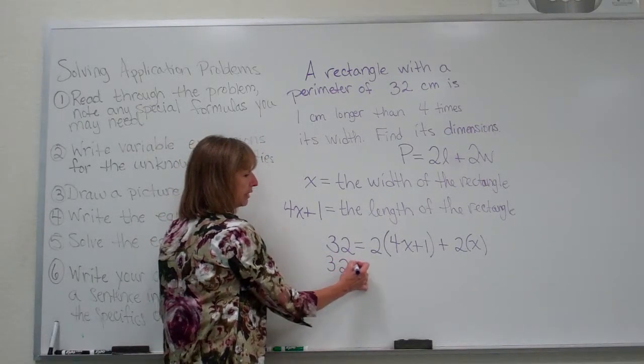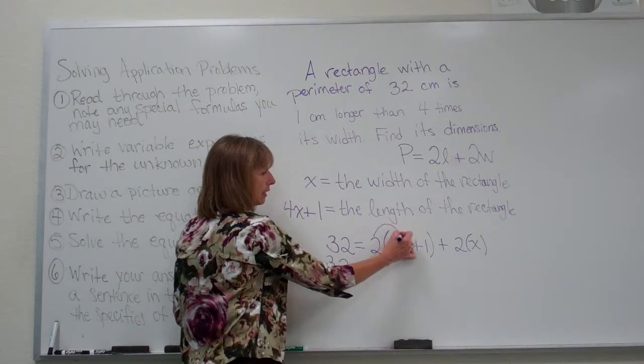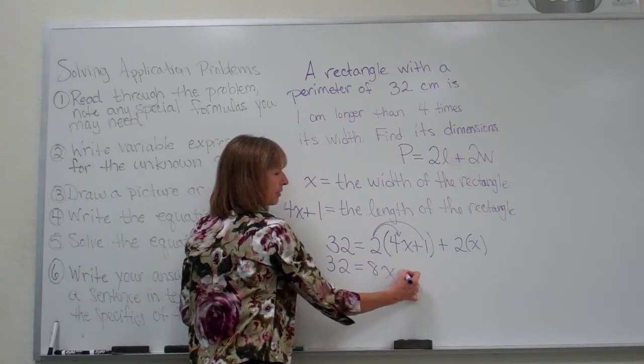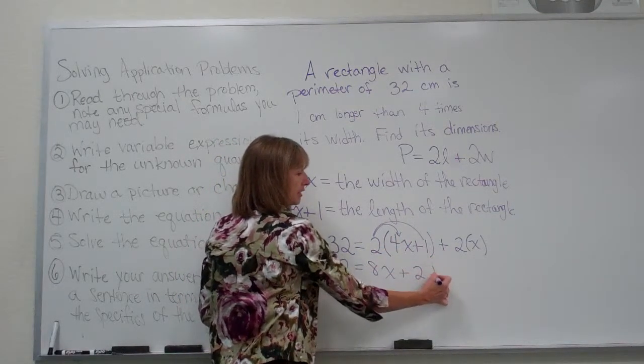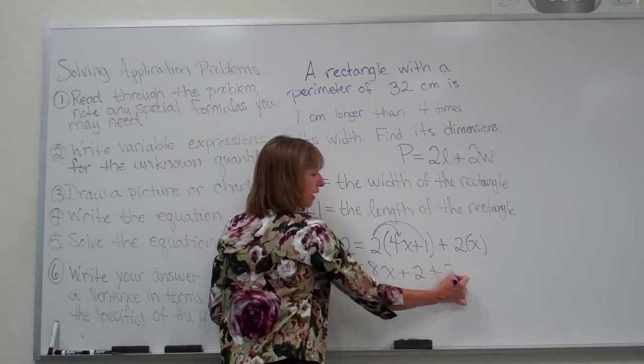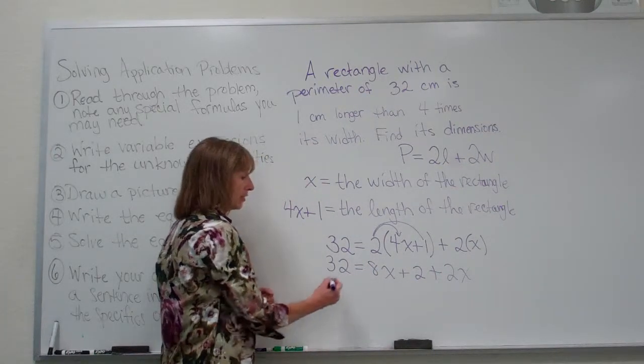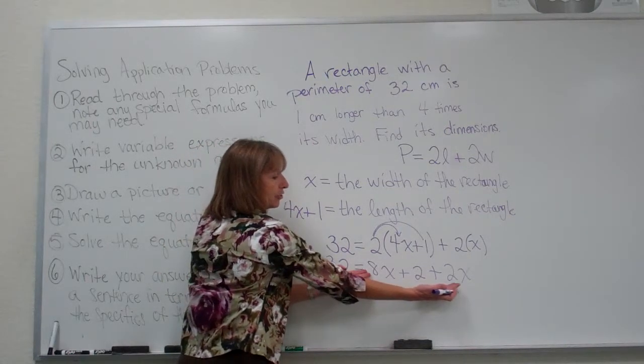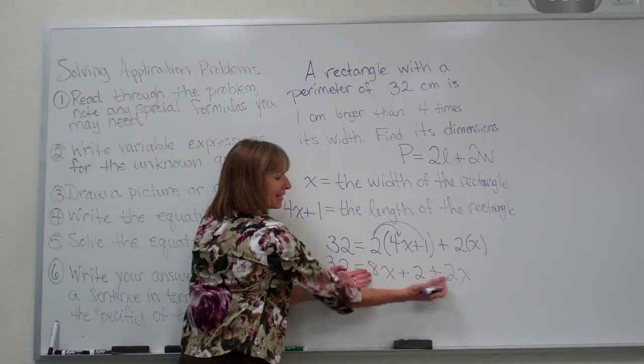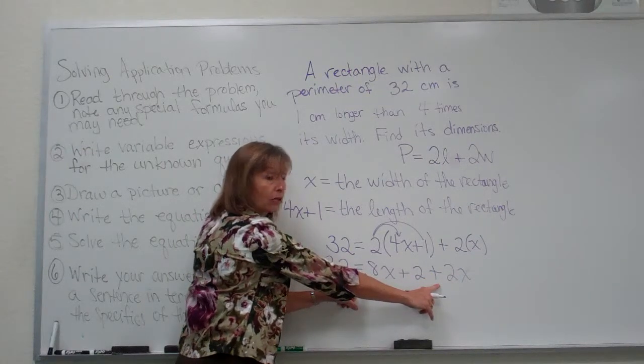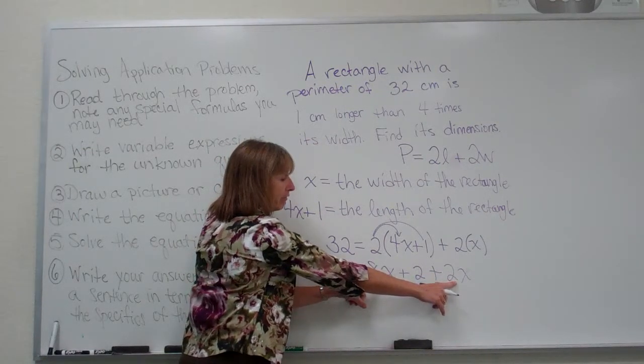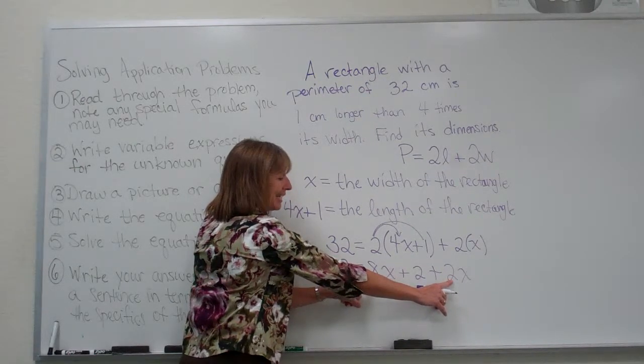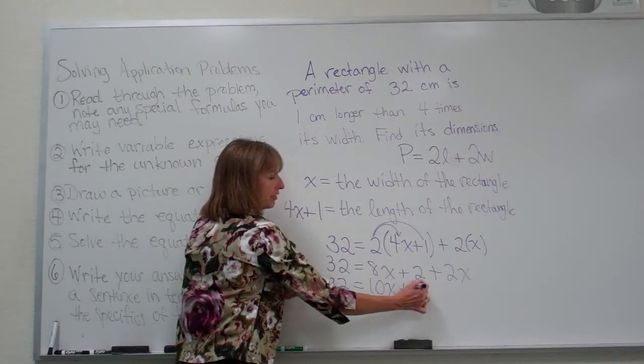So I have 32 is equal to 2 times 4x is 8x. Plus 2 times 1 is 2. And then plus my 2 times x is 2x. Let's combine our like terms. That's 32 is equal to. This 2x and this 8x are on the same side of the equal sign. So I just want to combine their numerical coefficients and keep the variable part. So this would be 8x plus 2x is 10x plus 2.